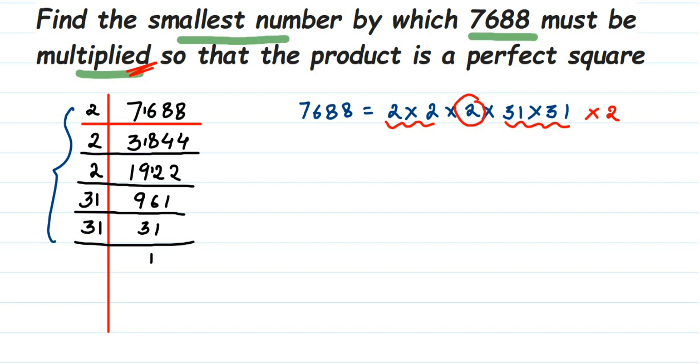The question is: what is the smallest number to be multiplied to get a perfect square? It's very easy - whichever factors you see that are not paired, those numbers are the smallest number to be multiplied. So the smallest number to be multiplied is two.